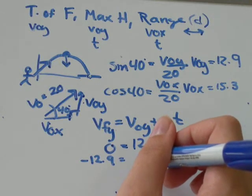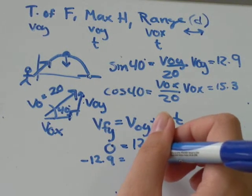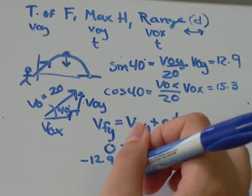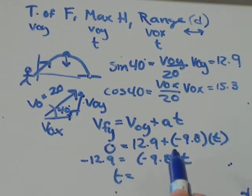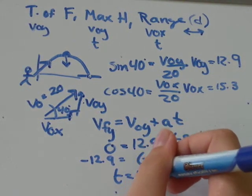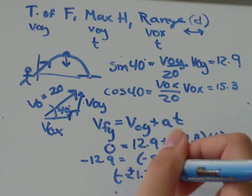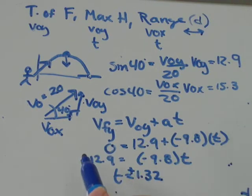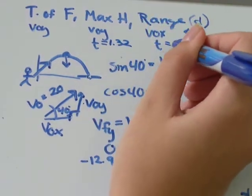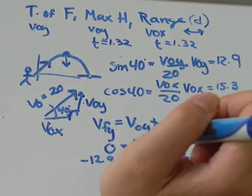0 plus negative 9.8 times time. To solve for time, you'll just divide both sides by negative 9.8. 12.9 divided by 9.8, I get is equal to 1.32. And, it's positive 1.32 because a negative divided by a negative is a positive. So, time equals 1.32.